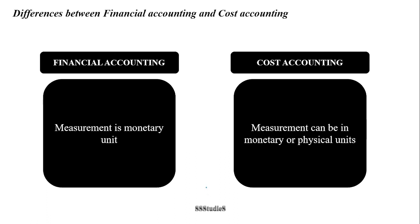When it comes to financial accounting, the measurement is in monetary units only, whereas in case of cost accounting, the measurement can be either in monetary units or in physical units. So cost accounting can be prepared either in rupee terms or in physical units such as number of units produced, whereas financial accounting is only in rupee terms.